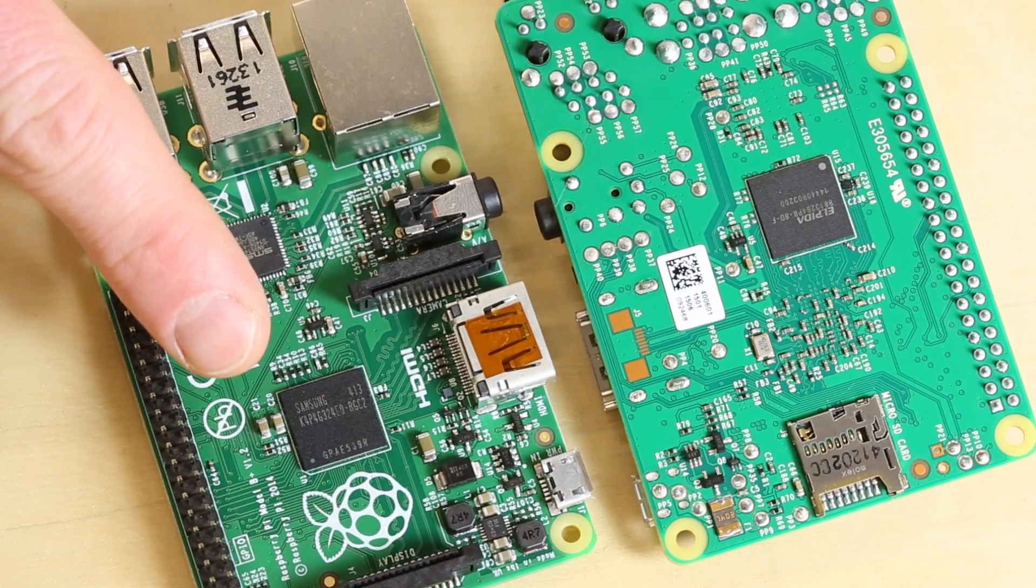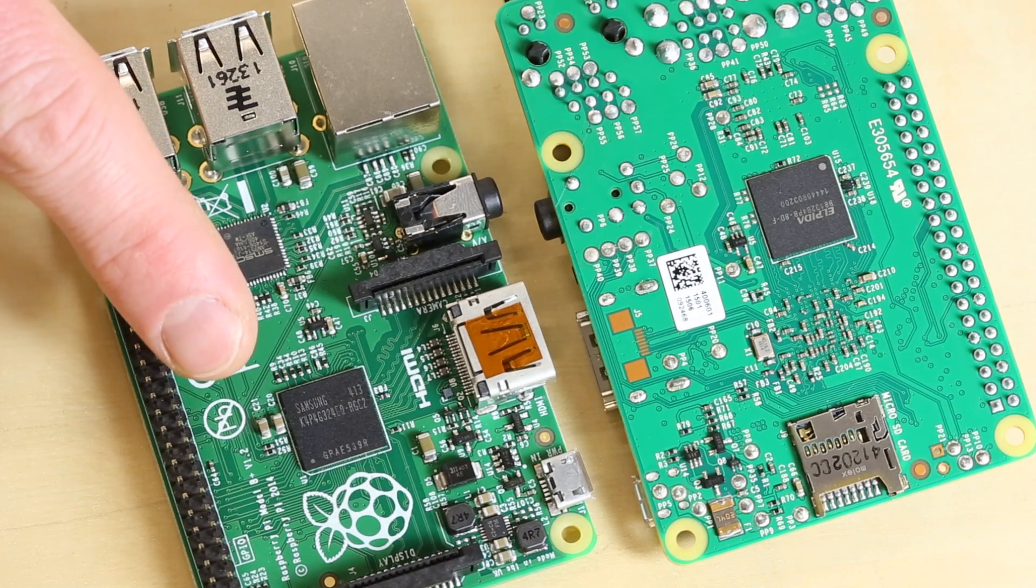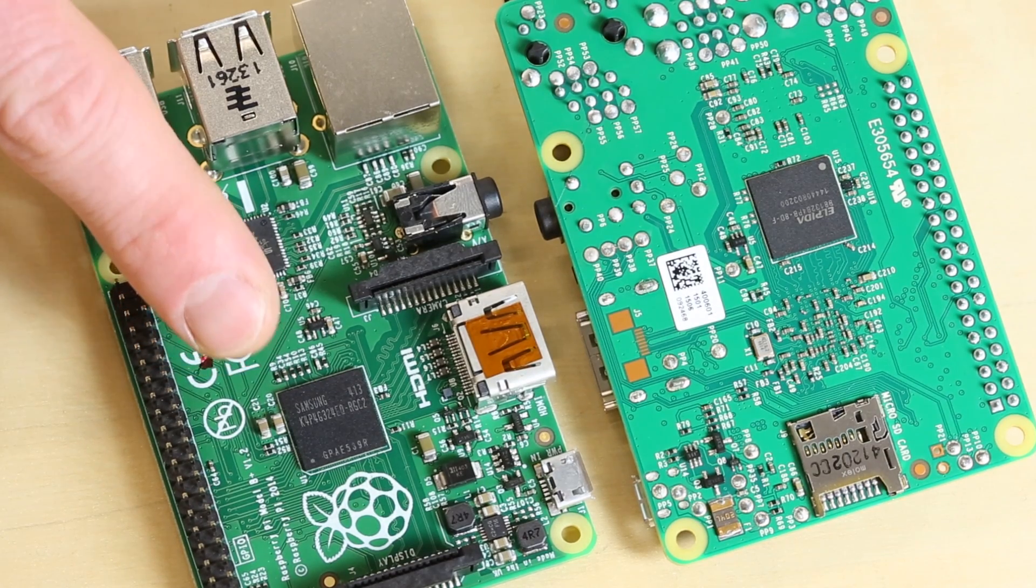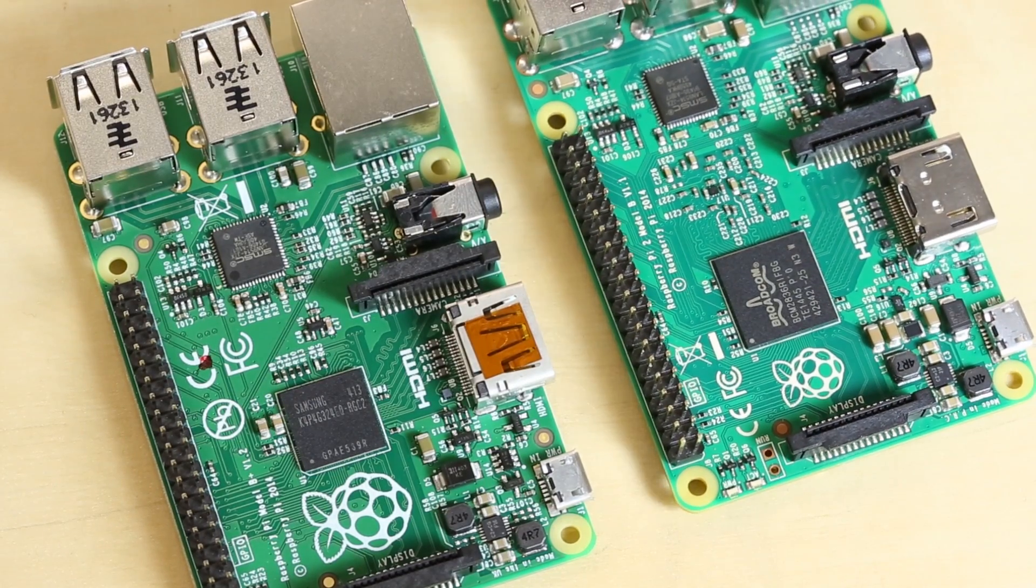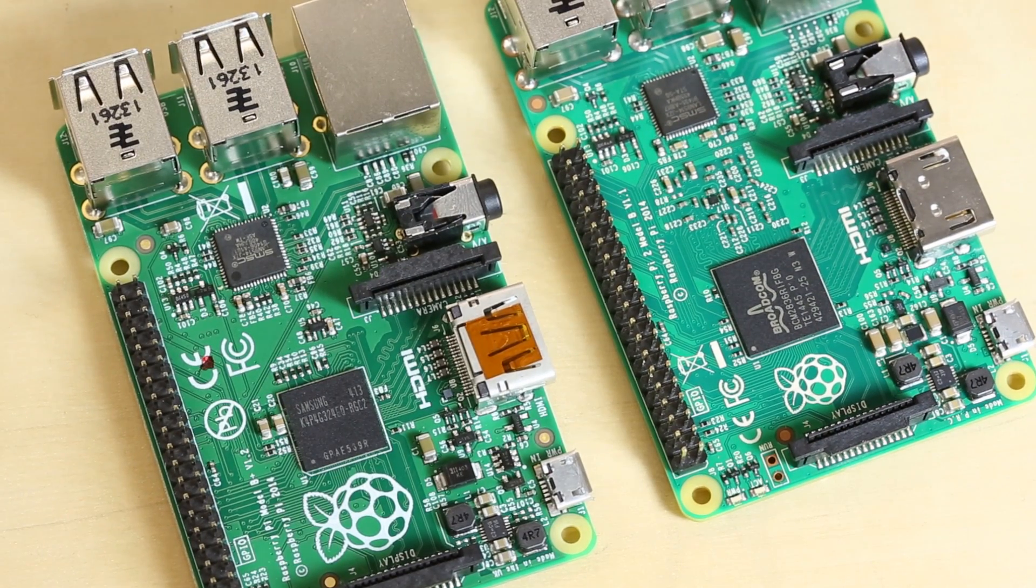In the Model B Plus, the Broadcom System on Chip was located underneath the RAM in the POP assembly. But if we flip over the 2, the Broadcom chip stays in the same place, but it is no longer a package-on-package assembly.